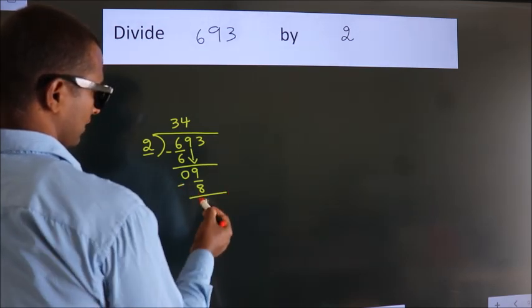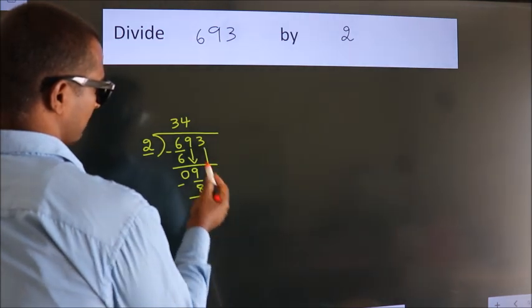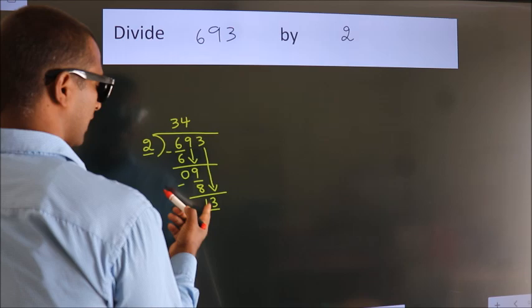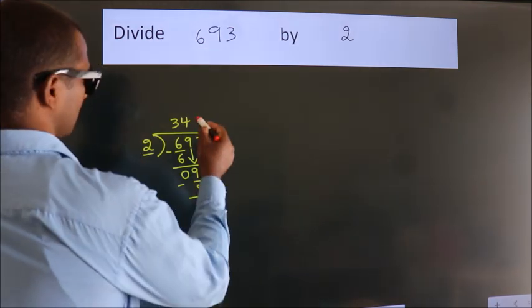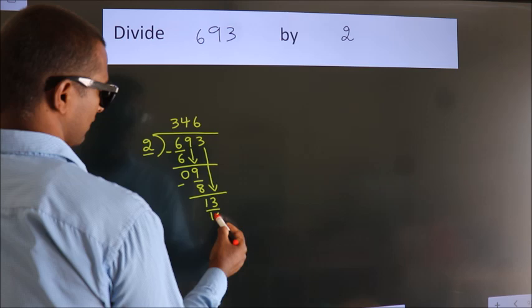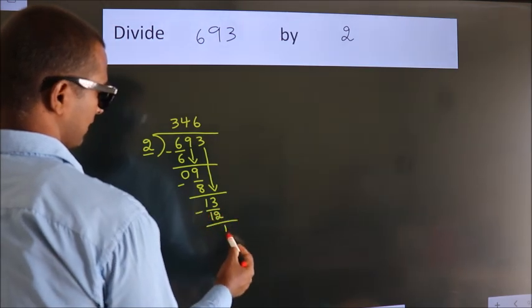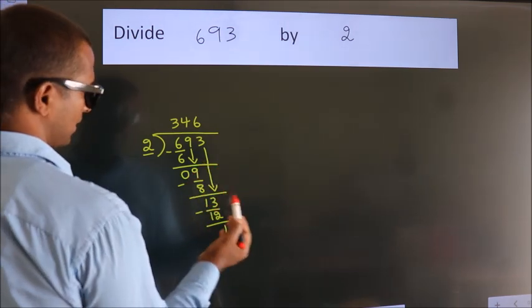Now we subtract. We get 1. No more numbers to bring it down, so we stop here. This is our remainder. This is our quotient.